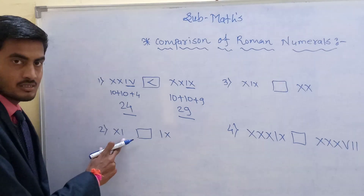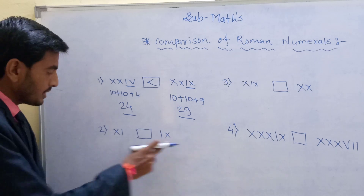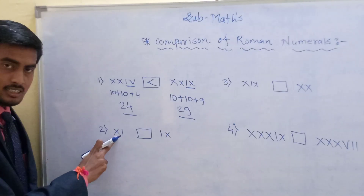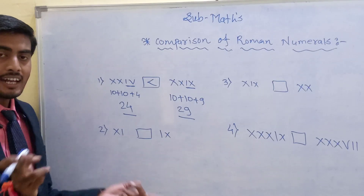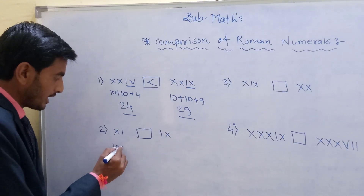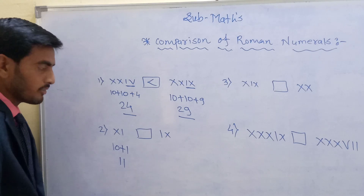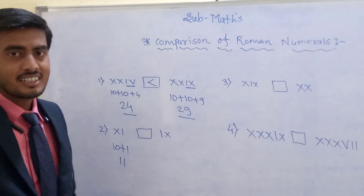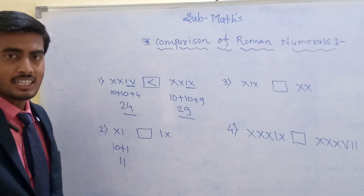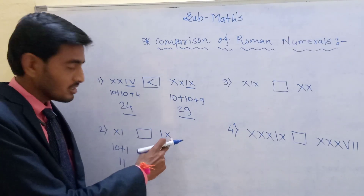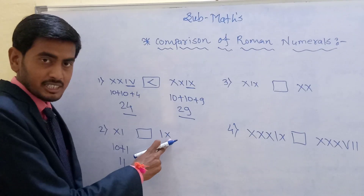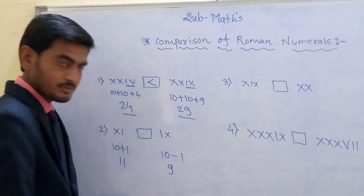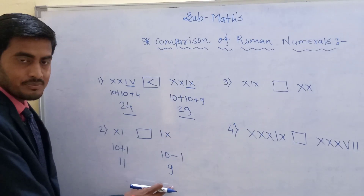Next example: XI and IX. According to rule number 5, when a smaller value is just after the greater value, we add both symbols. X is the greater value and I is the smaller value, so 10 plus 1 is equal to 11. According to rule number 4, when a smaller value is just before the greater value, subtract the smaller from the greater. I is the smaller value and X is the greater value, so 10 minus 1 is equal to 9. Compare 11 and 9 — 11 is the greater.